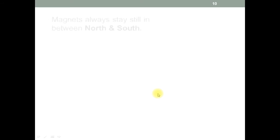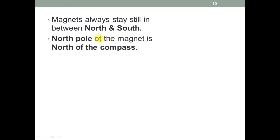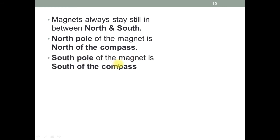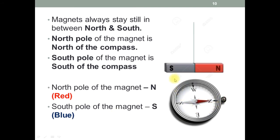From the above activities, you will understand that magnets always stay still aligned between North and South. The North pole of the magnet points North on the compass, and the South pole of the magnet points South on the compass. We mark the North pole of a magnet as capital N in red color, and the South pole as capital S in blue color, as clearly shown in this picture.